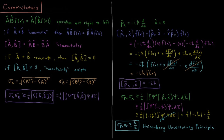Okay, so for commutators, if A and B commute, then we can do this operation in either order. So A, B acting on f, then A acting on f would be equal to A acting on f, then B acting on f.